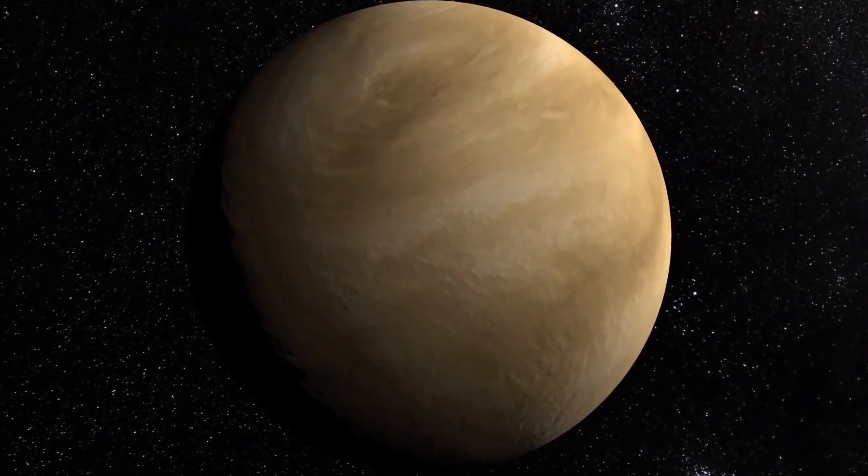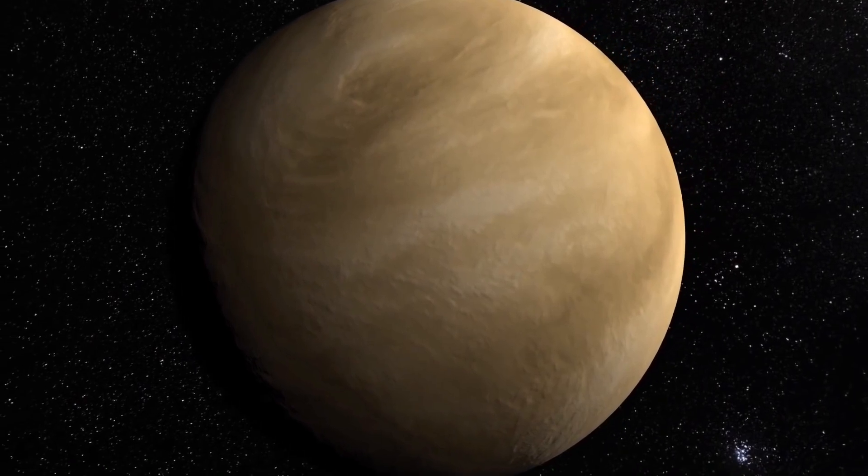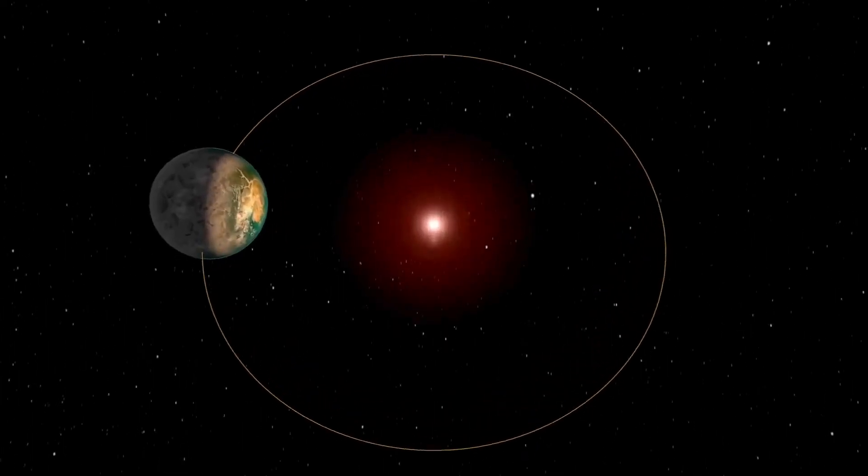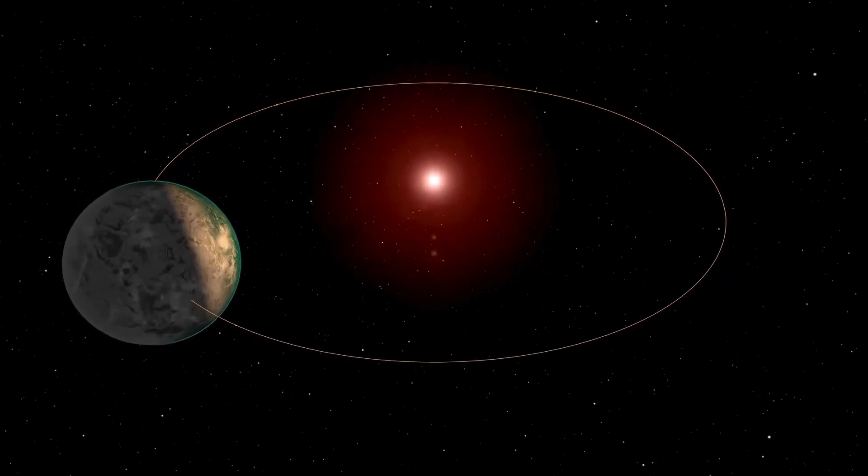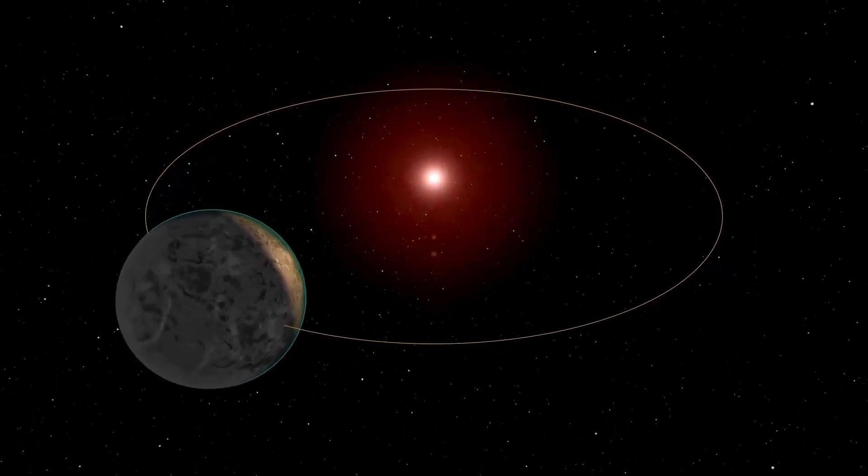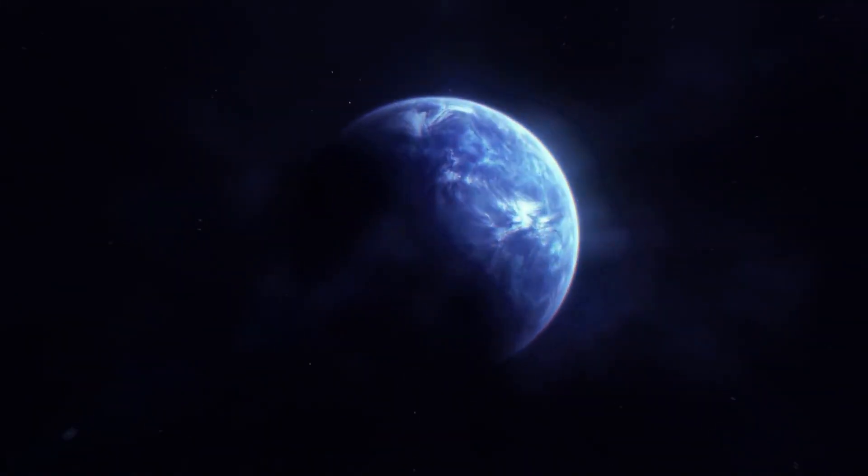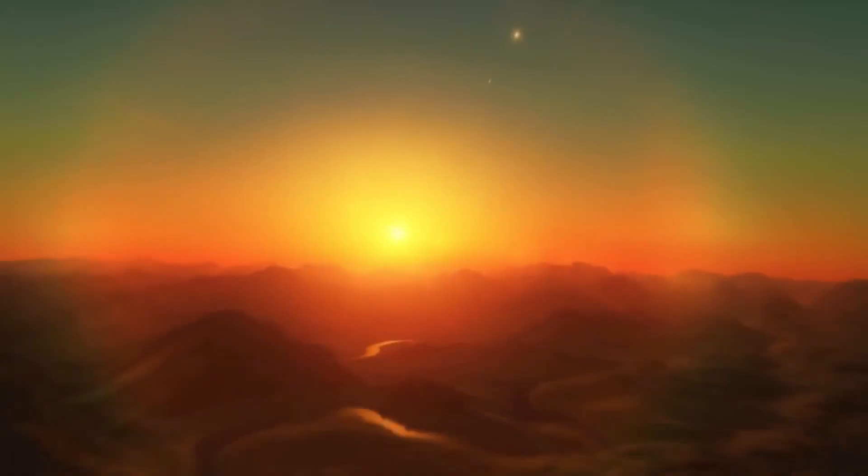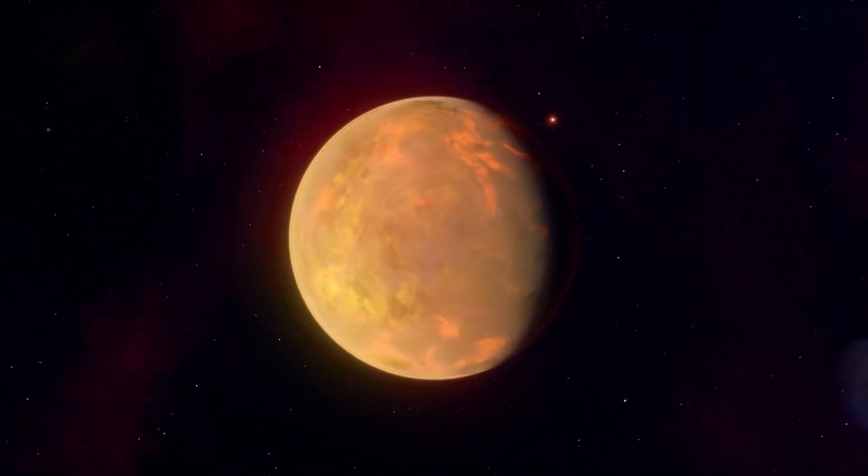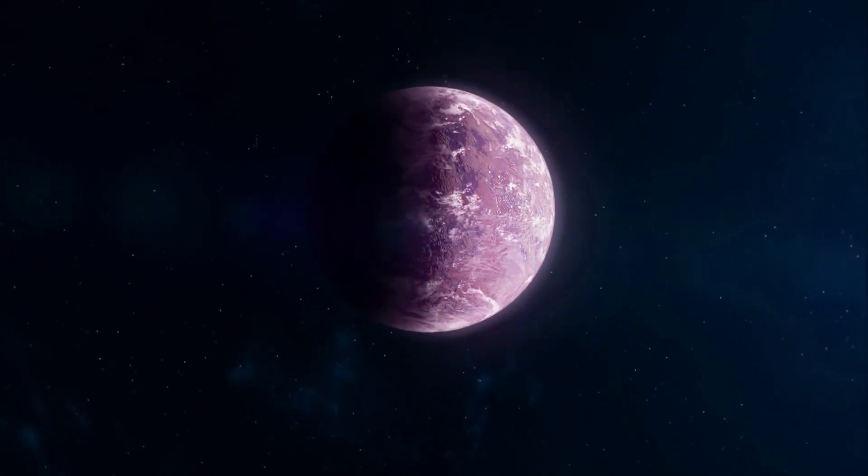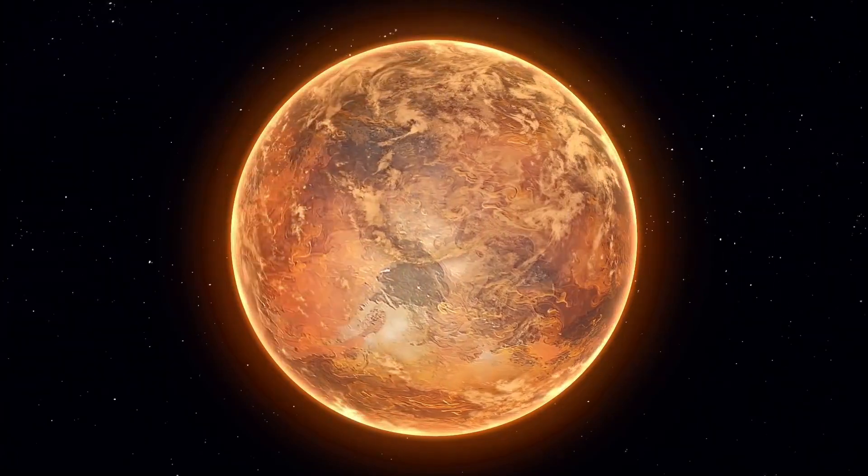Proxima Centauri b is very similar in size to Earth, with a mass of 1.17 Earth masses. It orbits its star in only 11.2 days, in contrast to our Earth's year-long orbit around our sun. That means Proxima Centauri b is a lot closer to its star than Earth is to the sun. But because the star is a red dwarf, much smaller and cooler than our sun, its orbit is indeed within the habitable zone of Proxima Centauri.